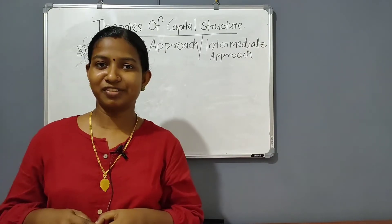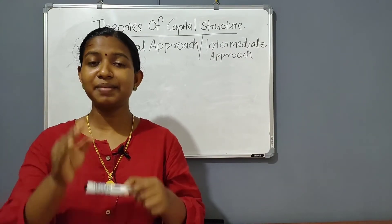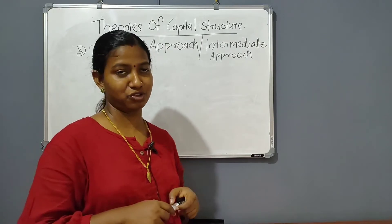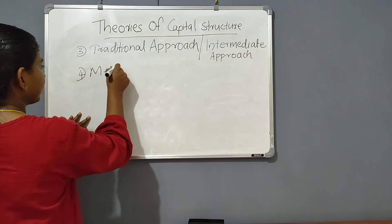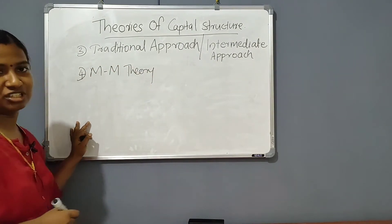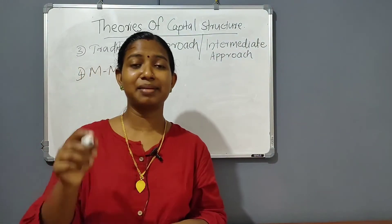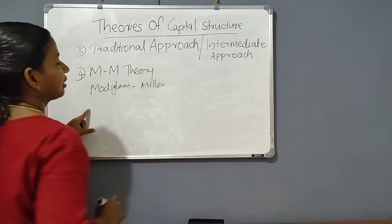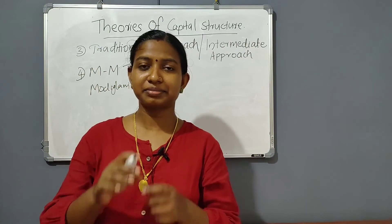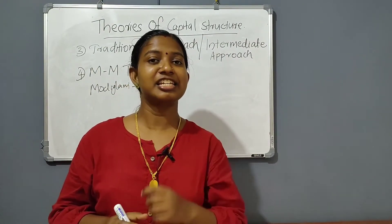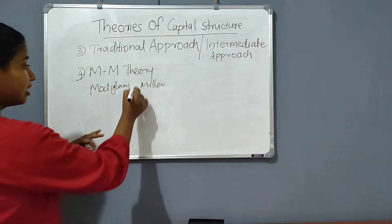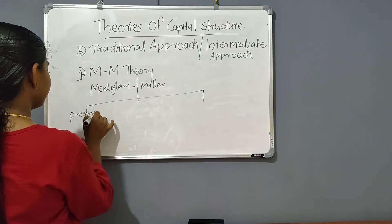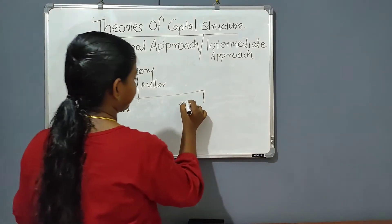The fourth theory is the M-M approach — the Modigliani and Miller approach. This is a well-developed theory. There are two positions in the M-M approach: one considers the absence of corporate tax, and the other considers the presence of tax.